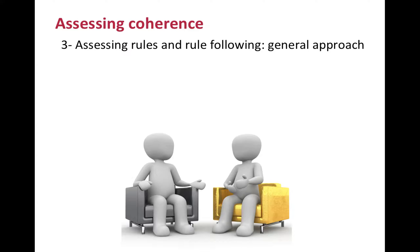Assessing rules and rule following consists of exploring how the client conceptualizes the contingencies influencing his behavior, and how he responds to these conceptualizations. Often, rules are spontaneously expressed by clients in an explicit fashion — for example, by saying, 'I can't tell my husband how I'm feeling or he will get mad at me.' This statement describes a behavior and a consequence. When rules are not spontaneously expressed, it is possible to unveil them by asking the client to describe thoughts that occur before, during, and after an action. A response like 'that I couldn't take it anymore' indicates a rule, even if not explicitly stated, because the client implies that staying in the room would have had bad consequences.